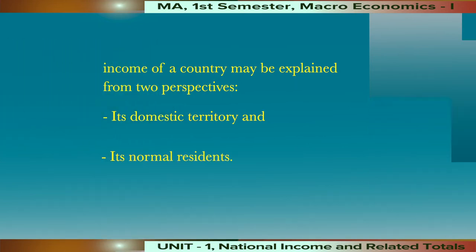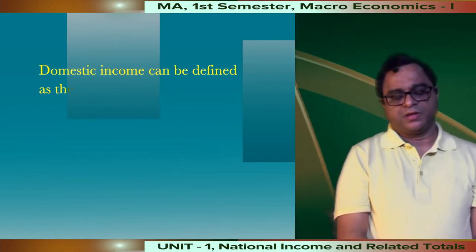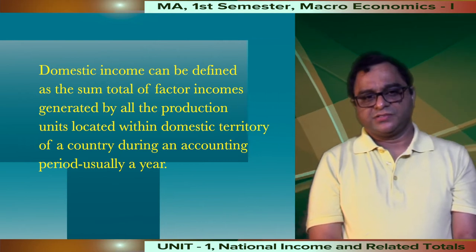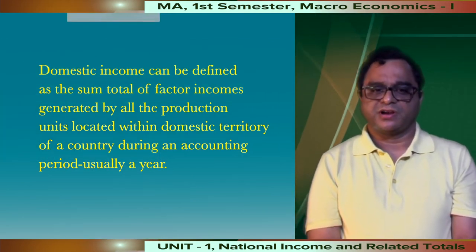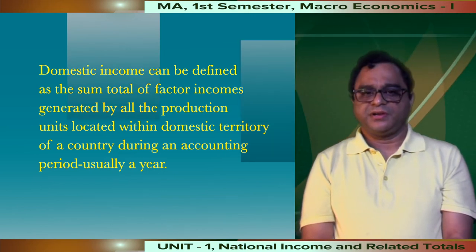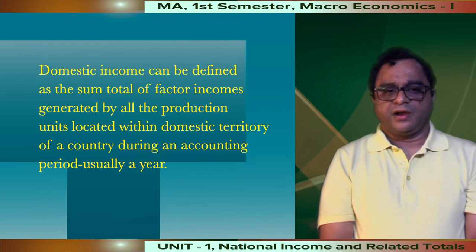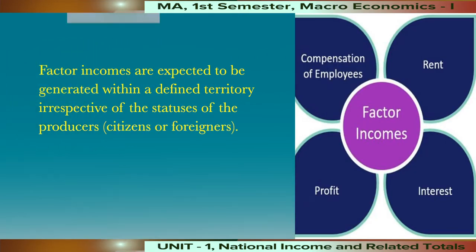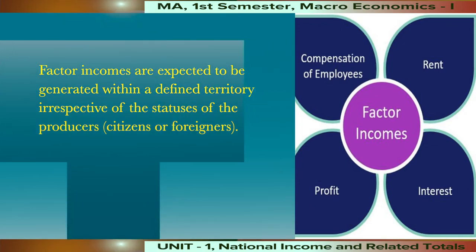We have already stated that the income of a country may be explained from two perspectives: its domestic territory and its normal residence. Here, the contrast between the two terms is very important. Domestic income can be defined as the sum total of factor income generated by all the production units located within the domestic territory of a country during an accounting period, usually a year. We should note that factor incomes are generated within a domestic territory irrespective of whether the producers are citizens or foreigners.